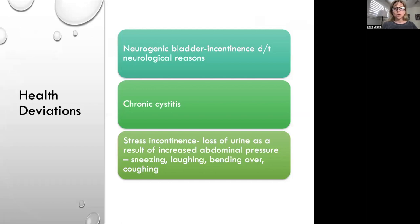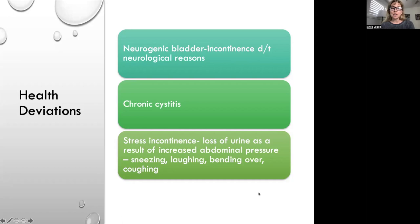A neurogenic bladder is incontinence due to neurological reasons — the patient doesn't feel the bladder expanding, so they have no control over it. Chronic cystitis is another cause. Stress incontinence is a loss of urine due to increased abdominal pressure from sneezing, laughing, bending over, or coughing. This can happen to women after childbirth when the muscles have been overstretched or damaged — any time they sneeze, they may urinate a little.